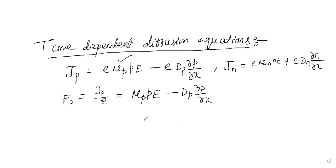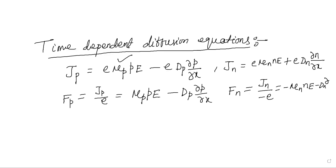Similarly, the electron flux — the number of electrons per unit area — is the current density for electrons divided by the charge of the electron. Dividing through by E, we can rewrite it as: mu_n times n times E, minus D_n times del n by del x.